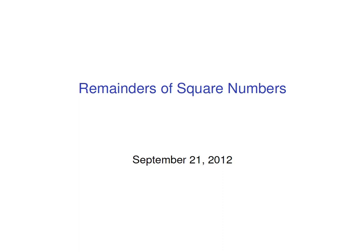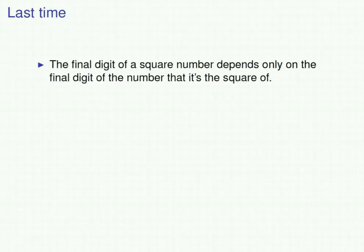Last time we studied the final digits of square numbers. Today we're going to generalize our finding from last time by looking at the remainders of square numbers when they're divided by a given number. Let's recall what we found last time: the final digit of a square number depends only on the final digit of the number that it's the square of.